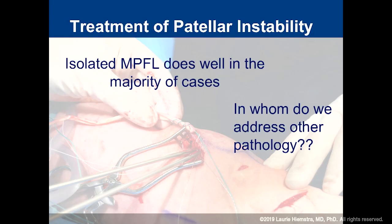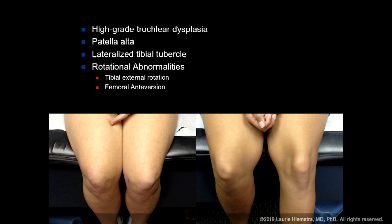What I want to talk about is those ones that are a little bit more difficult, and who are the patients that you actually need to address the other pathology you find. If you look at the pathoanatomic risk factors for patellar instability, the real big players are going to be high-grade dysplasia, patella alta, that lateralized tibial tubercle, and rotational abnormalities.